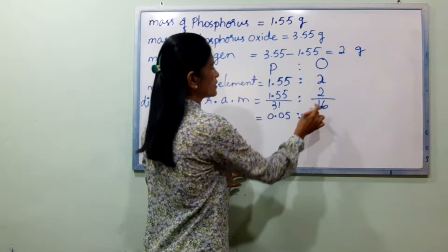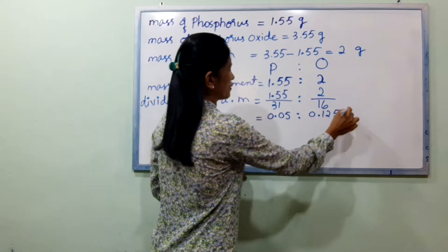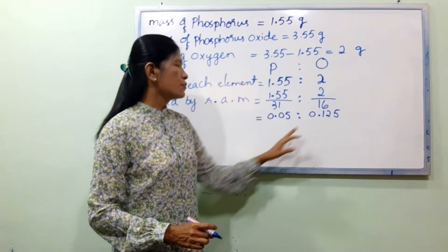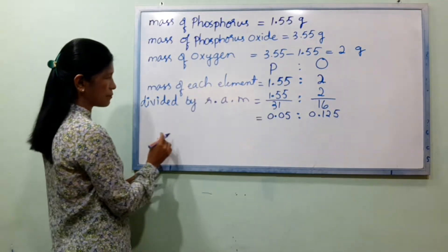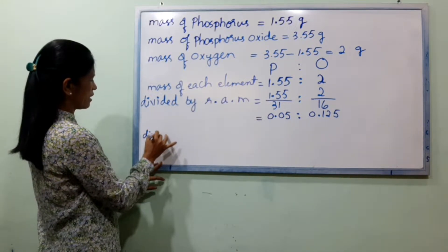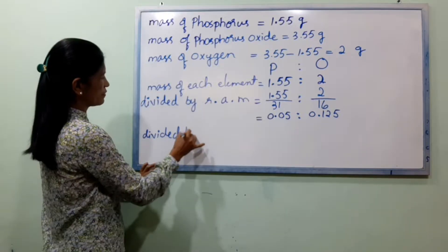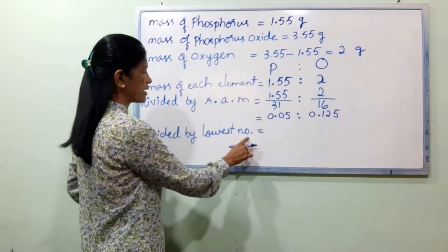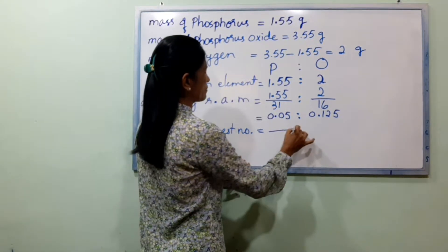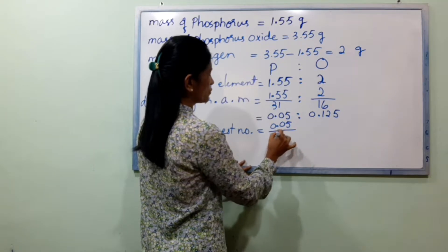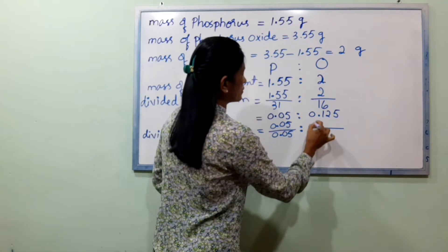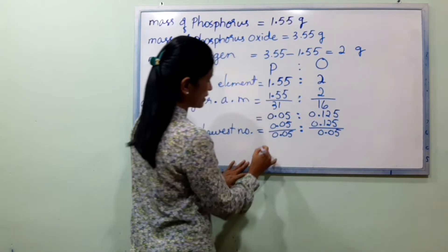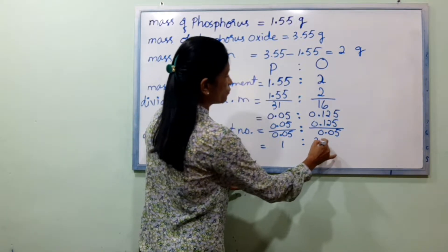For oxygen: 2.00 divided by atomic mass 16 gives 0.125. Now divide by the lowest number, which is 0.05. Phosphorus: 0.05 divided by 0.05 equals 1. Oxygen: 0.125 divided by 0.05 equals 2.5.